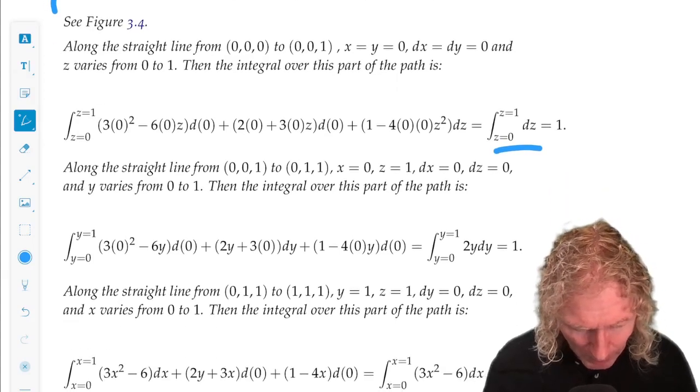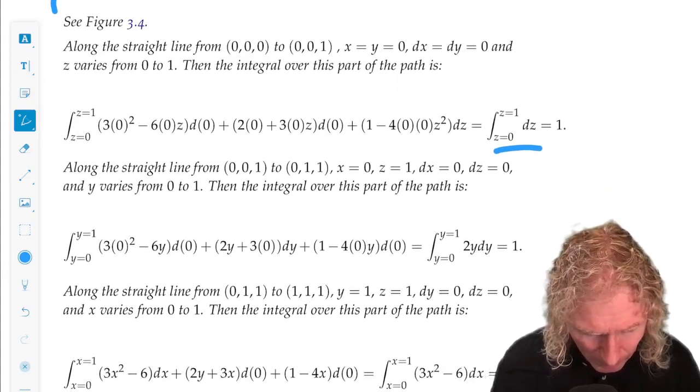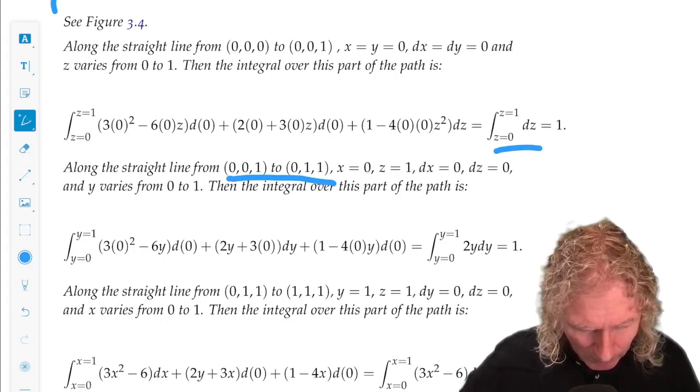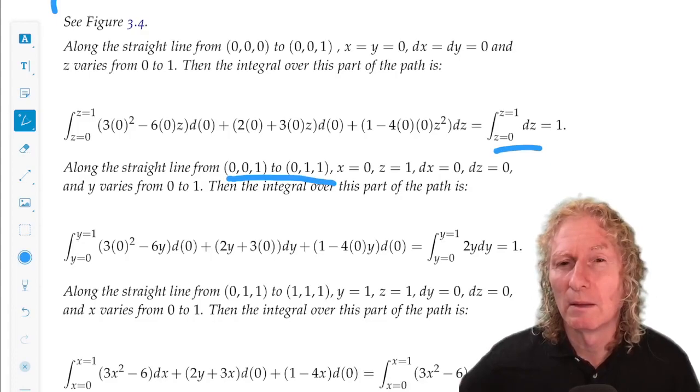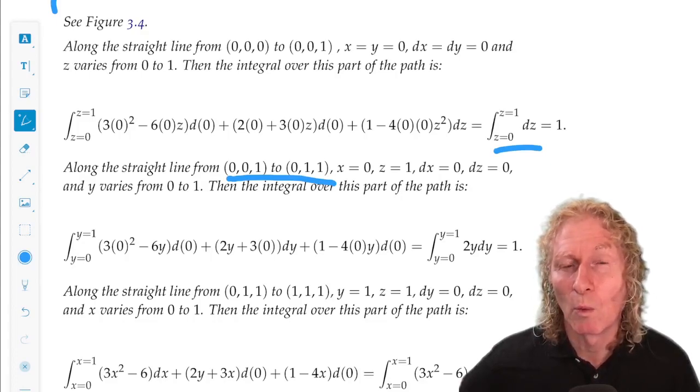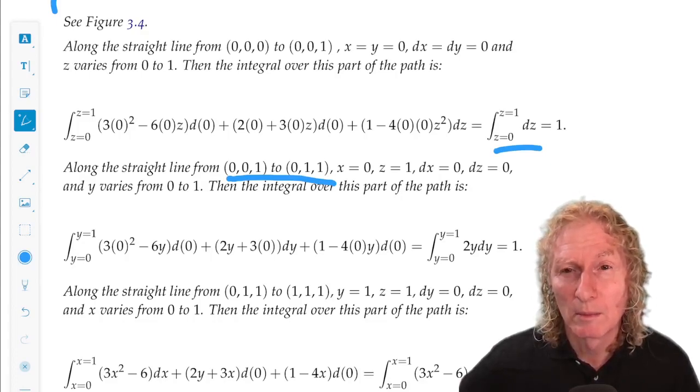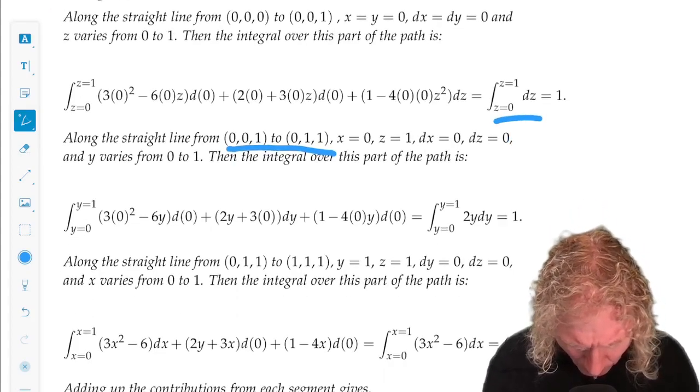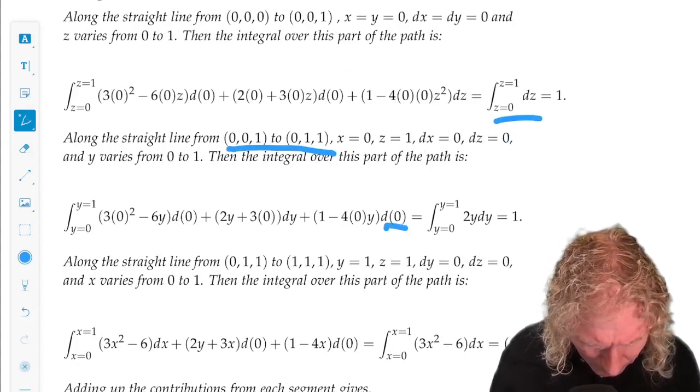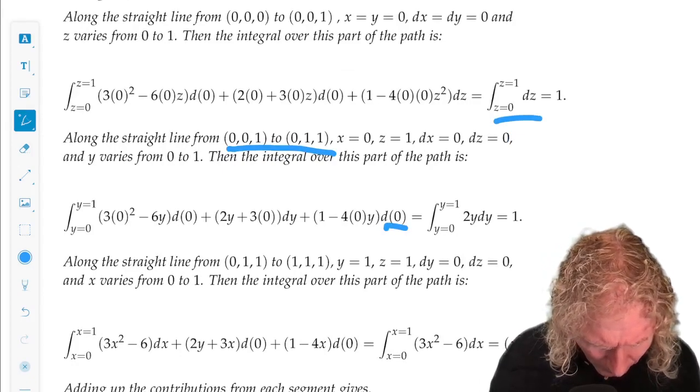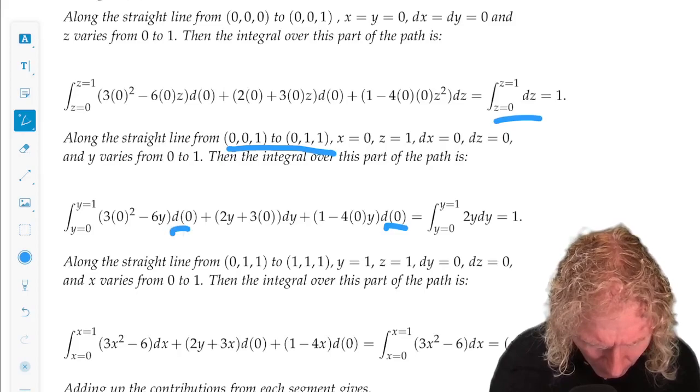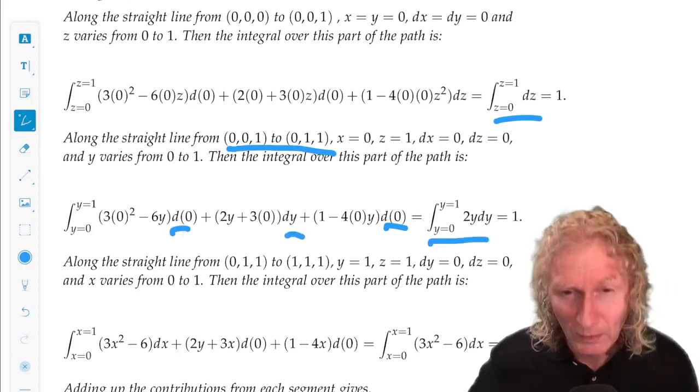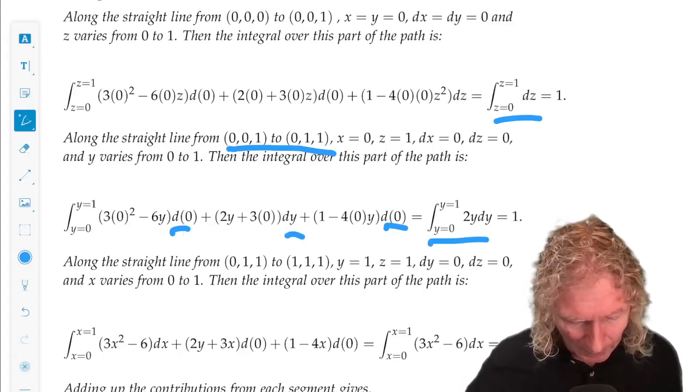Now the next path element, x is 0. And z is fixed at 1. But dz has to be 0 in this case, which you see here. dx is 0.